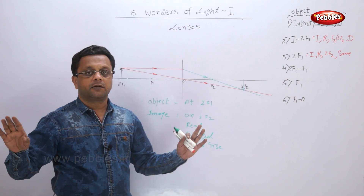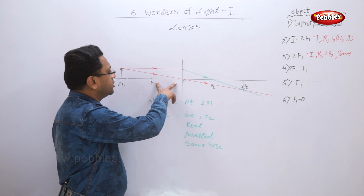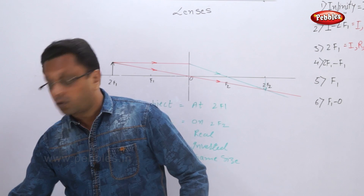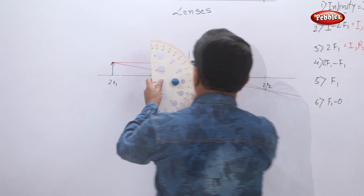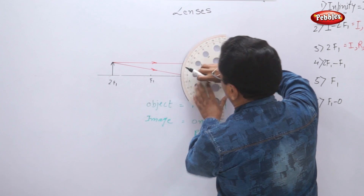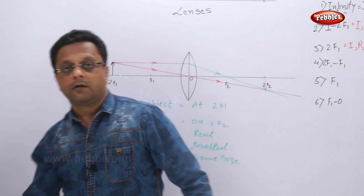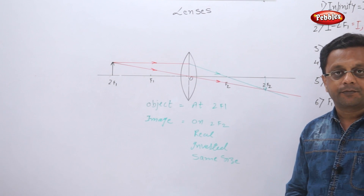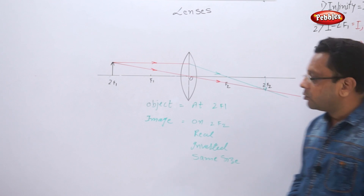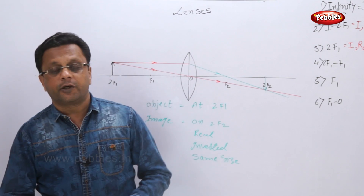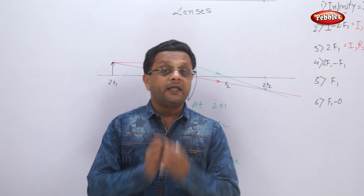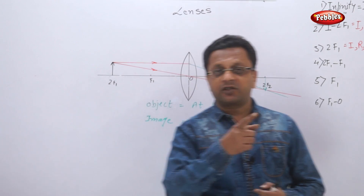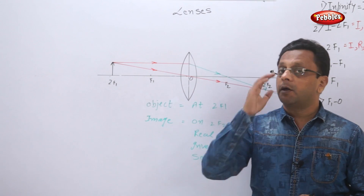At the end, draw the lens curvature to complete the figure. Write clearly: object at 2F1, image at 2F2, real, inverted, same size. Practice these figures many times so you can draw them fast and perfectly in the exam.